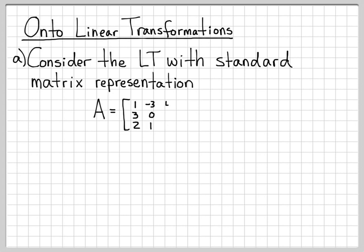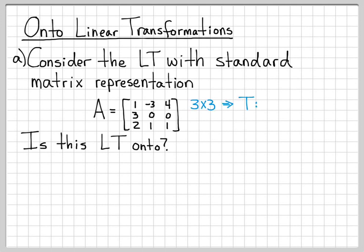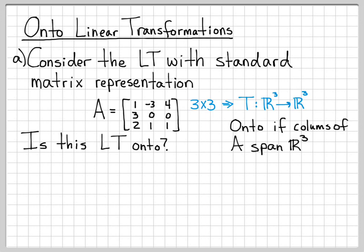In part A, we're going to look at this linear transformation and determine if it is onto. This is a three-by-three matrix, which means it takes elements in R3 and returns elements in R3. A linear transformation is onto if its columns span R3 — meaning we can combine them to reach any point we want in R3.